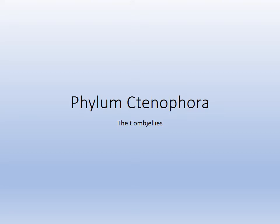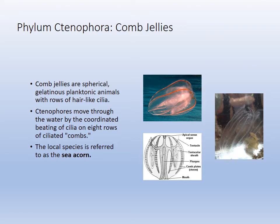Phylum Ctenophora, the comb jellies, used to be in the same phylum as cnidarians, except they do not have stingers or a ring of tentacles. They have a jelly-like body, so early taxonomists grouped them together. They are bioluminescent, attracting plankton to eat them. They're also referred to as sea acorns. One was captured in a plankton tow at Weedon Island, and the other image shows museum-quality photography of their bioluminescence.